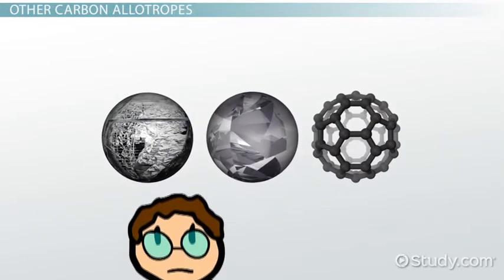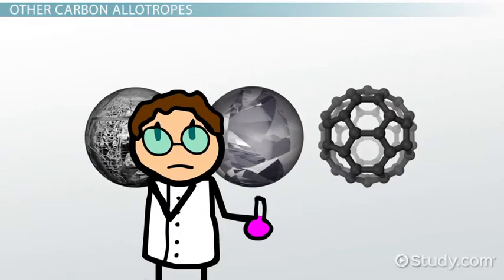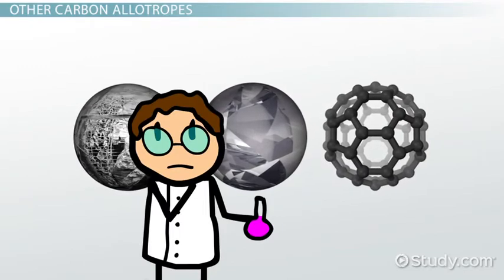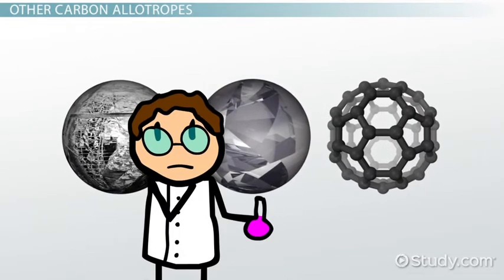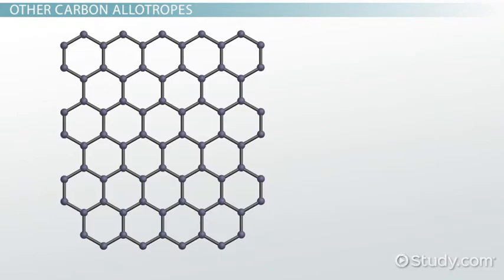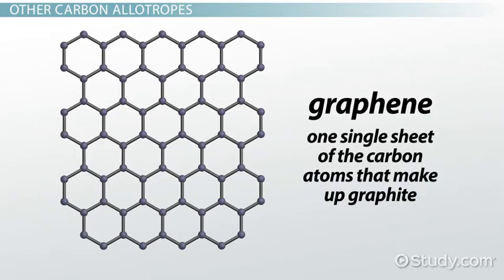Other than the three main allotropes of graphite, diamond, and Buckminster Fullerene, scientists continue to discover new allotropes for this amazing atom. For example, engineers and scientists are especially curious about graphene, which is made from one single sheet of the carbon atoms that make up graphite.